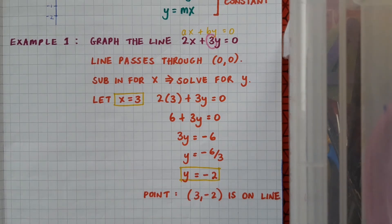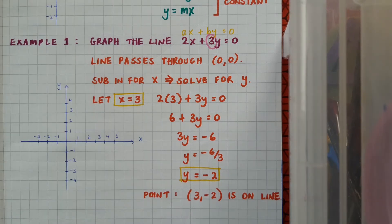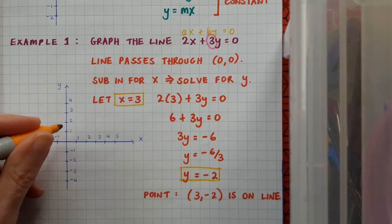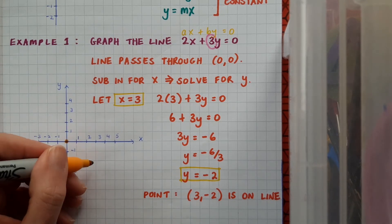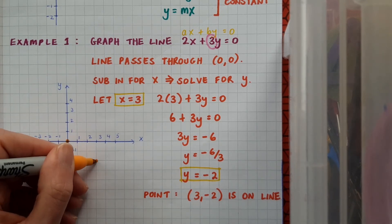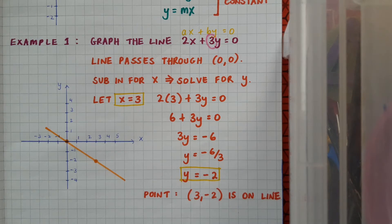Now I can draw my xy plane, mark these points in, and join them together. Pause the video here while you do that yourself, then play to see that you're correct. So I've drawn my xy plane. I'll mark in the origin (0, 0) as the first point, and then my other point (3, −2): out to 3 and down to minus 2. Then I'll join them together to make the line. And this is the line 2x plus 3y equals 0.